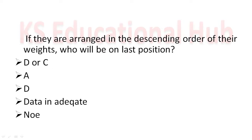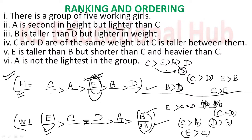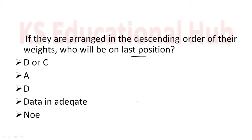Question 2: If they are arranged in descending order of weight, who will be at the last position? Descending order of weight — the last position is B. Answer: B.